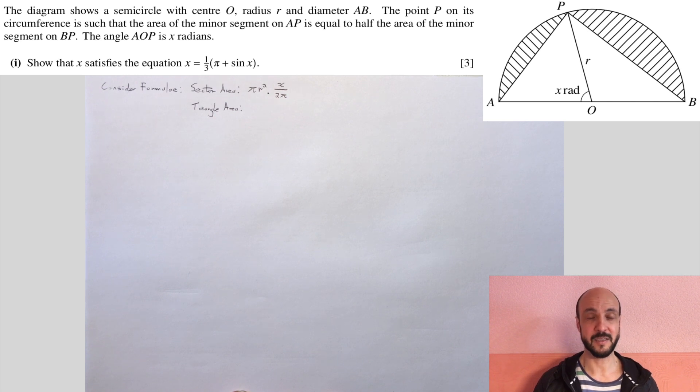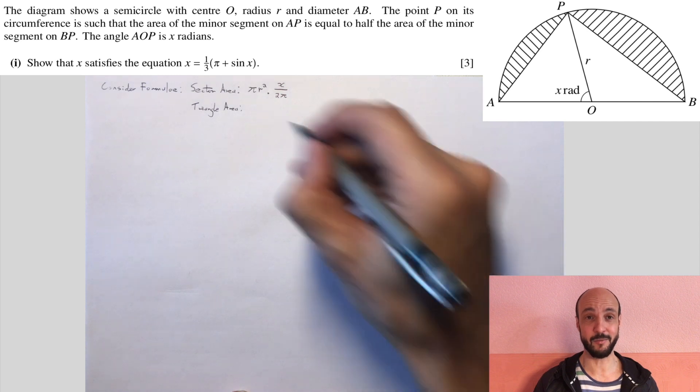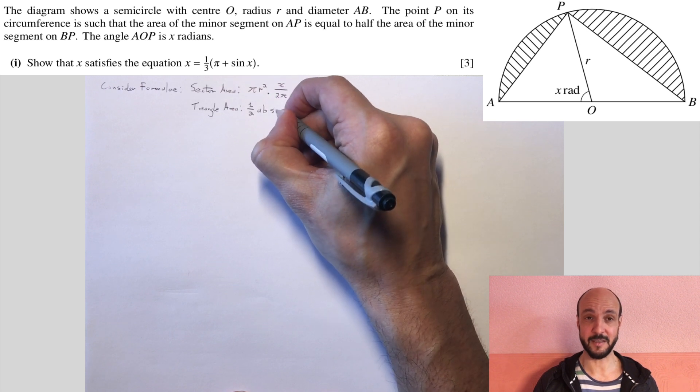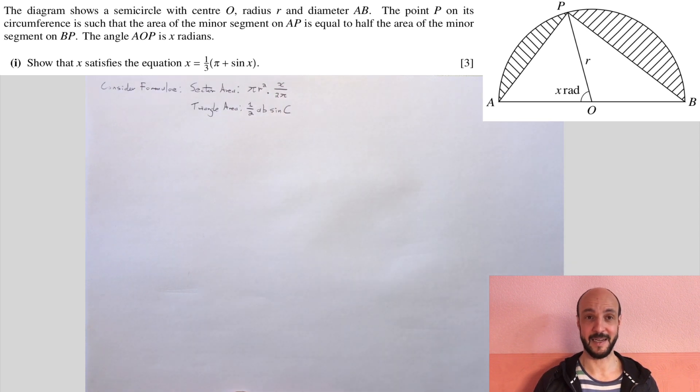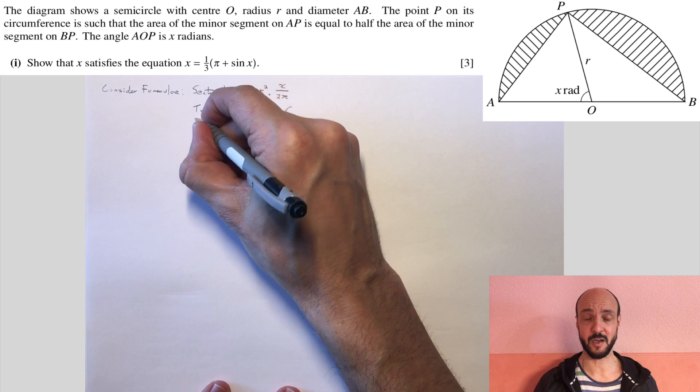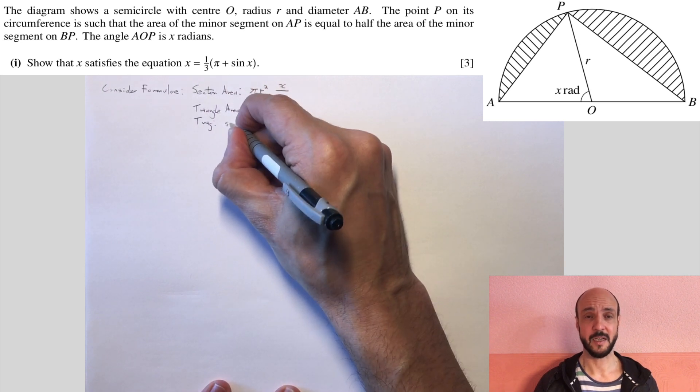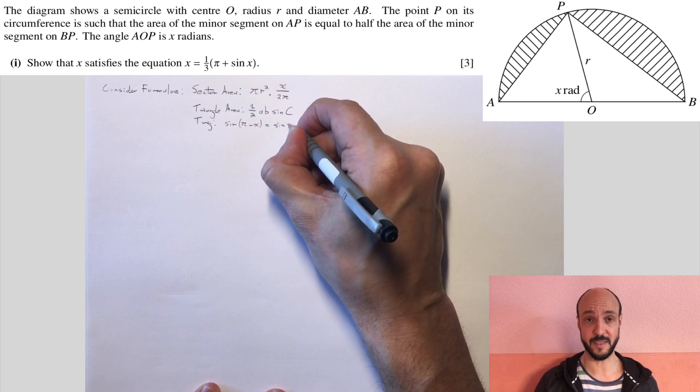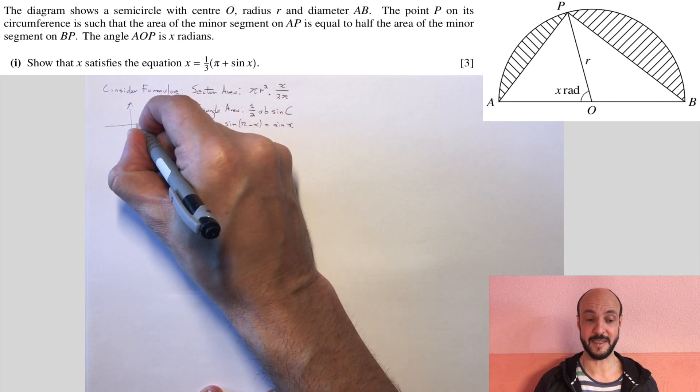So we need to know that formula of the area of a circle or be able to deduce it from intuitively thinking about the circle. We also need to know the area of a triangle using the sine rule. Again, I think coming from GCSE work. So the area of a triangle using the sine rule is half of AB sine C, where A and B are two sides and C is the enclosed angle. And we also need to use one trigonometric rule. This trigonometric rule is that the sine of pi minus x is equal to the sine of x.